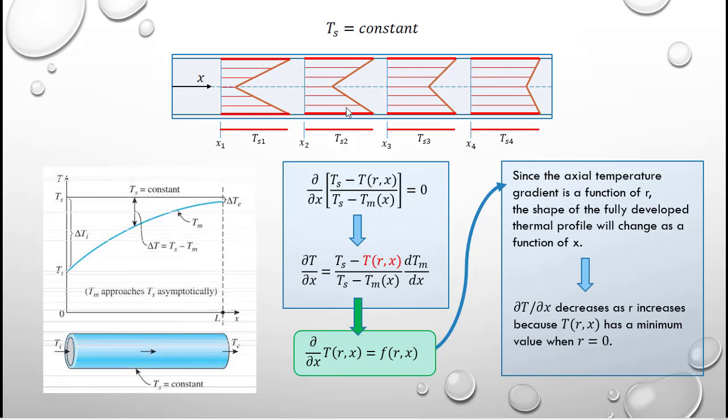What this results in, if we were to plot the temperature difference being T_S minus the mean temperature, we find that there is no longer a linear relationship. In this case, as we work through the actual mathematics, we will find that this is a logarithmic variation in temperature. We will have a log mean temperature for the case where T_S is a constant.